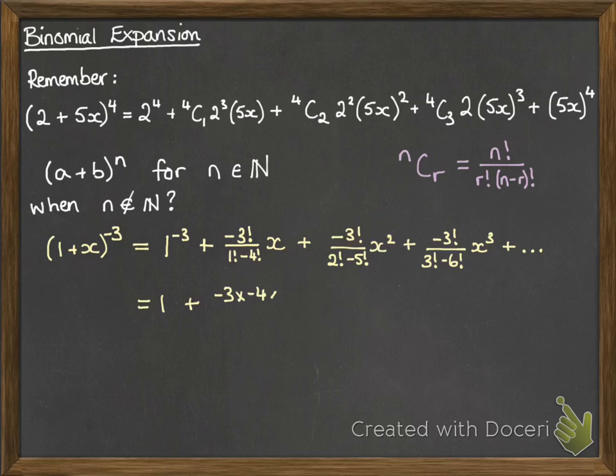Now if we tidy up that a little bit, we can think about what this actually means. Minus 3 factorial, that's minus 3 times minus 4 times minus 5, and you can see it will carry on forever. But we can simplify it a little with the bottom. The bottom, 1 factorial is just 1. Minus 4 factorial carries on minus 4, minus 5, minus 6, and so on. But that clearly cancels with the top part of that. So we end up with minus 3 over 1 times x.